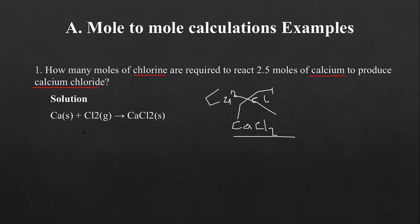You have to make sure that this equation is balanced. Let's check: we have one calcium on the left and one calcium on the right. We have two chlorine here and also two chlorine there. So this equation is already balanced. After writing a balanced chemical equation — that is step 1 — you write a balanced chemical equation.